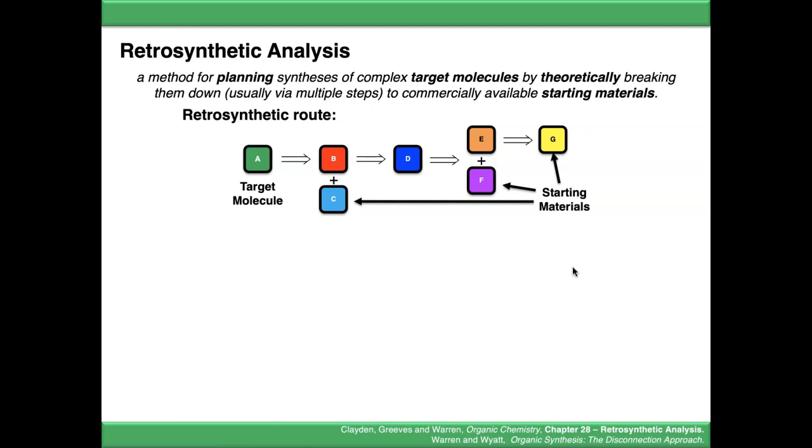But obviously a synthesis runs forward. We're going to start with our synthetic route from the starting material at the end of the chain, so that's G. We think we can convert G into E using a specified set of reagents and conditions, which you would include.